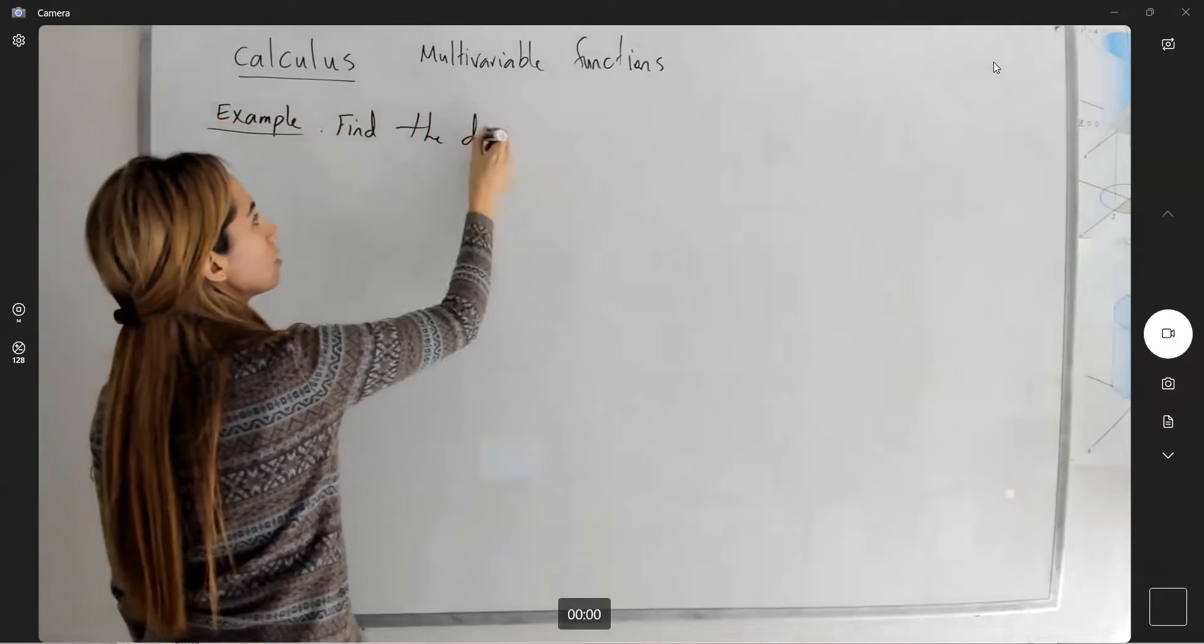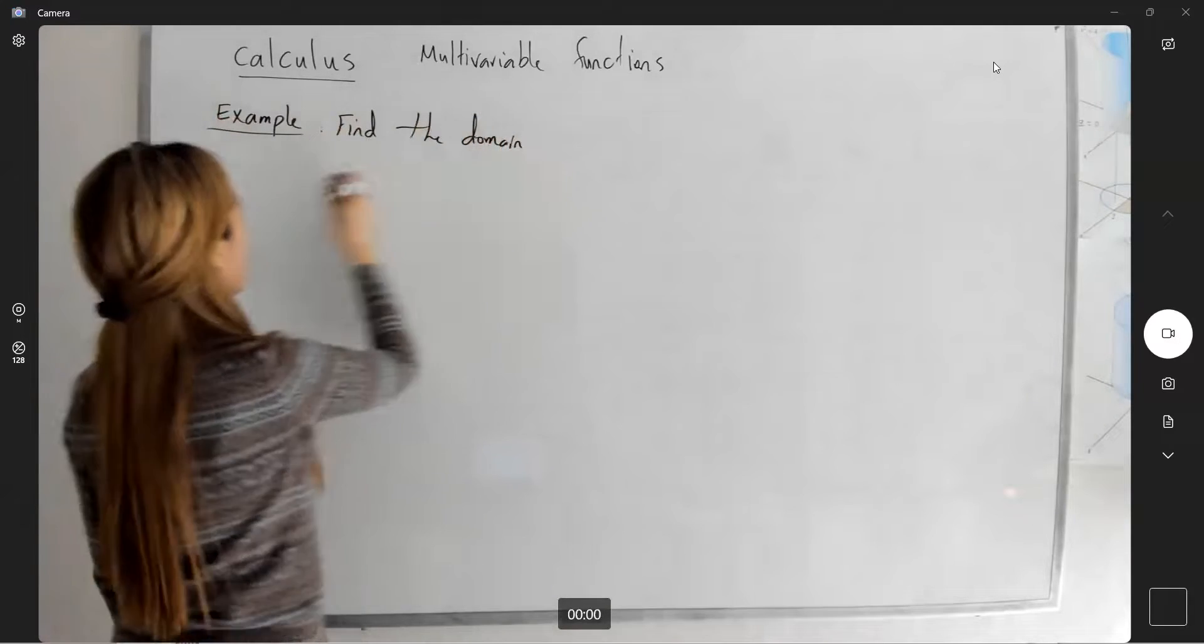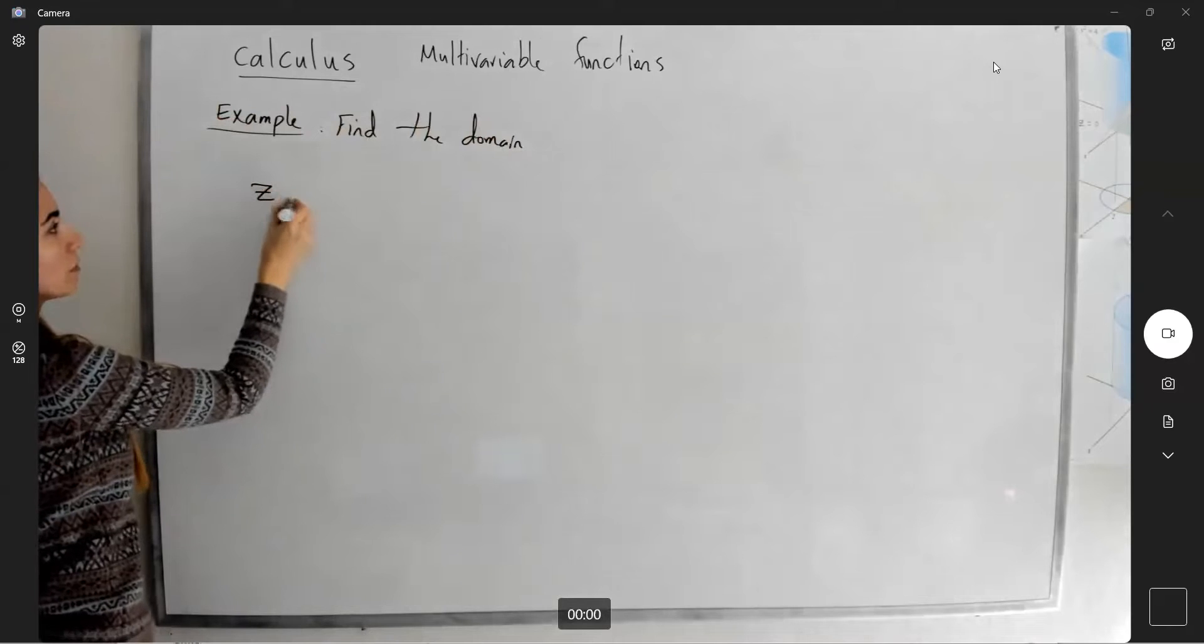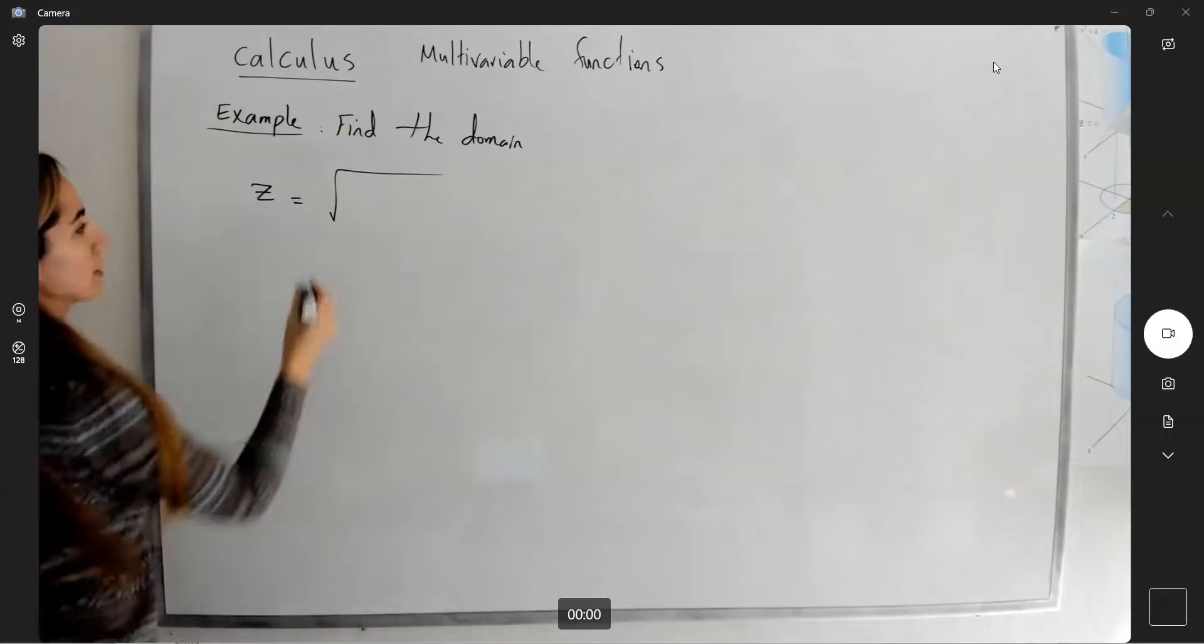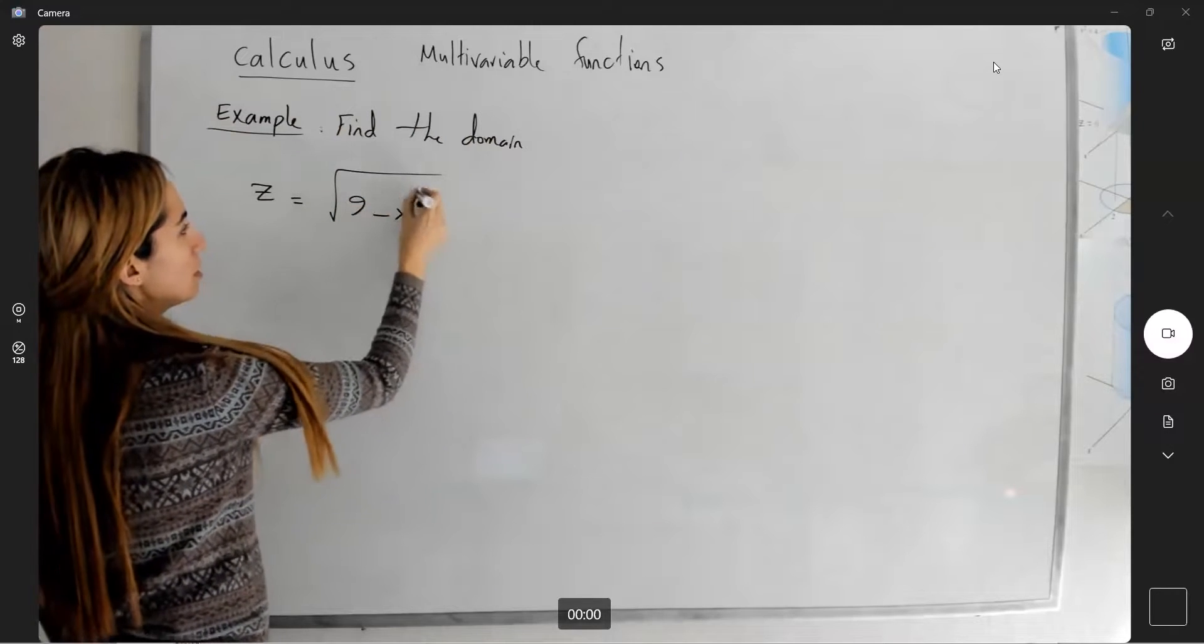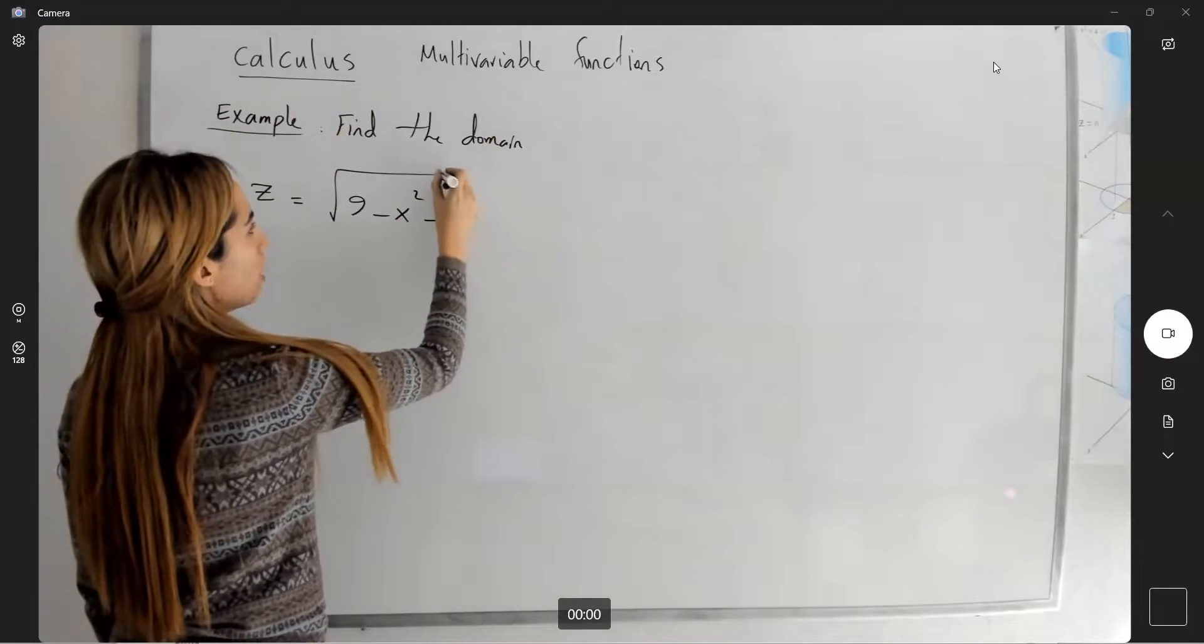Find the domain of z equals the square root of 9 minus x squared minus y squared.